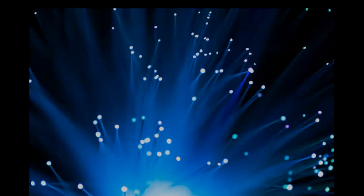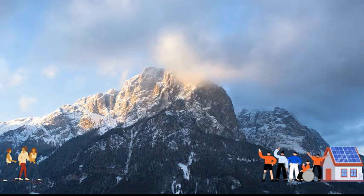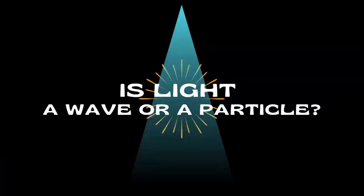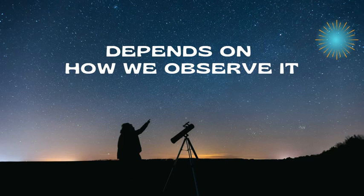Light also acts like tiny packets of energy called photons. Imagine photons as little energy bullets, each carrying a specific amount of energy. These photons explain how light interacts with matter, like when sunlight heats your skin or powers a solar panel. So is light a wave or a particle? The answer is, it is both. Depending on how we observe it, light reveals its dual nature, reminding us of the incredible complexity of the universe.